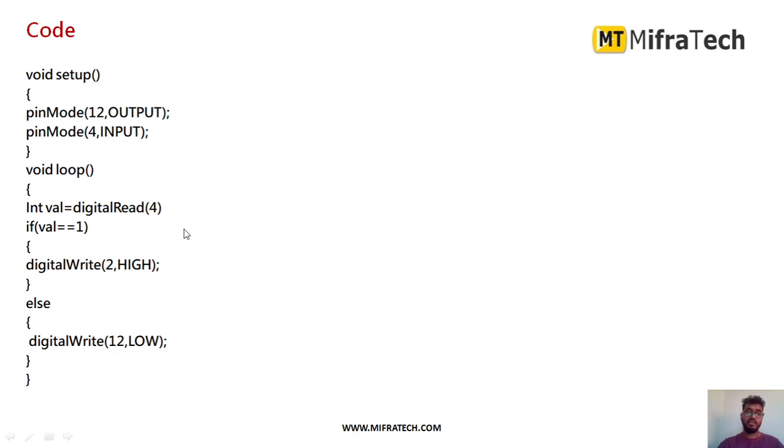Now I am checking whether any orientation or tilt is detected, whether inclination is detected or not. If the value is 1, it means it is detected. Whenever any orientation or vibration is detected, I am glowing the LED, making the LED turn on by using digitalWrite of pin number 2, making it HIGH. At that time the LED will glow.